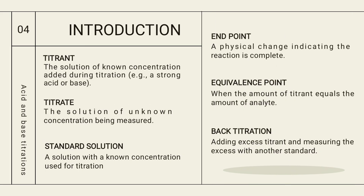The titrant is a solution of known concentration — for example, 0.1 molar, 1 molar, or 0.1 normal — which is added during the titration. It can be a strong acid or strong base, such as HCl or NaOH. The titrate is a solution of unknown concentration that we place in the conical flask with an indicator and titrate against the titrant. We calculate the reading at which the concentration is neutralized by observing the color change.